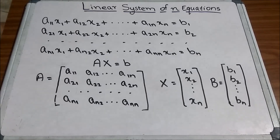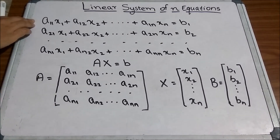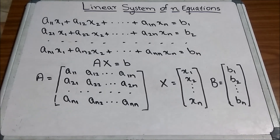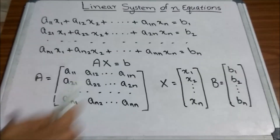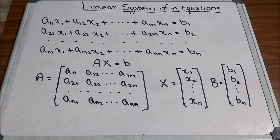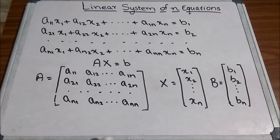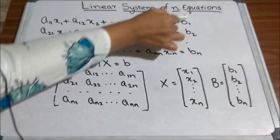Now I will show you what is a linear system of n equations. A linear system of n equations in n unknowns x1, x2, ..., xn is a set of equations of the form: a11·x1 + a12·x2 + ... + a1n·xn = b1, a21·x1 + a22·x2 + ... + a2n·xn = b2, and so on, where the coefficients aij and bk are any given numbers.